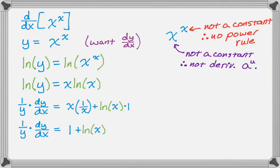And from there, what I'm going to do is I want to get dy dx by itself. So I'm going to multiply both sides by y. So dy dx is 1 plus the natural log of x and then times y.